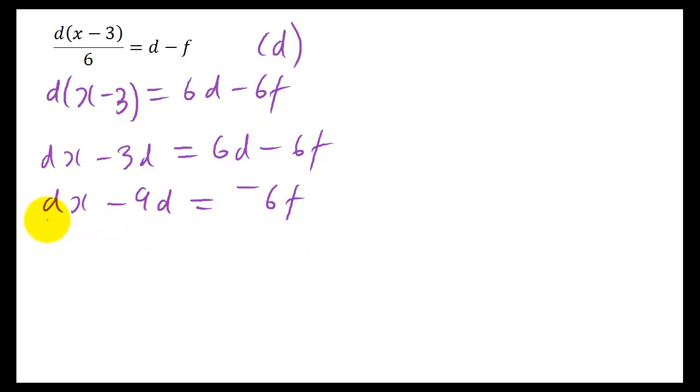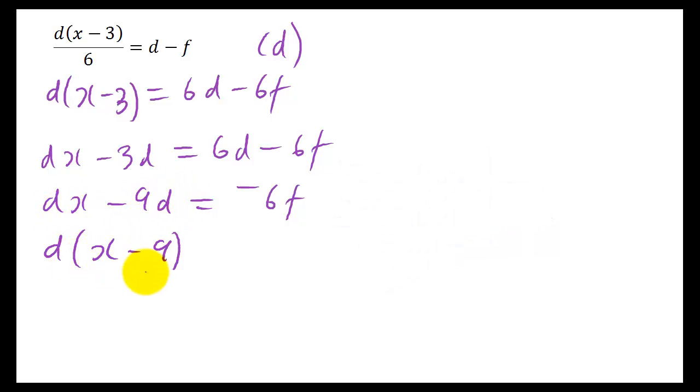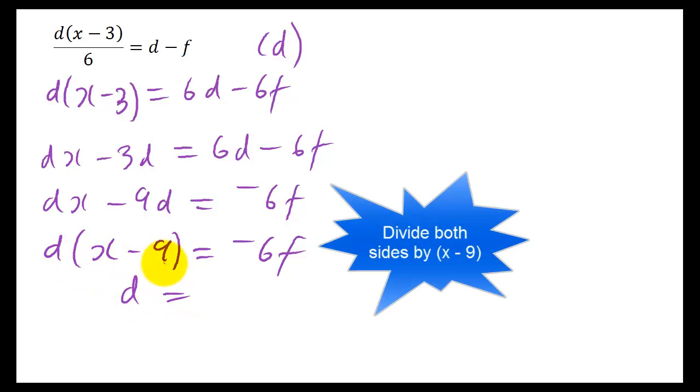Now we've got D here, D here. And the only way to get D on its own is to factorise. So we take out a factor of D. So D into DX leaves you just X. Take out a factor of D just leaves you minus 9. And we want to get D on its own so you've got D times X minus 9. Let's just divide both sides by X minus 9.